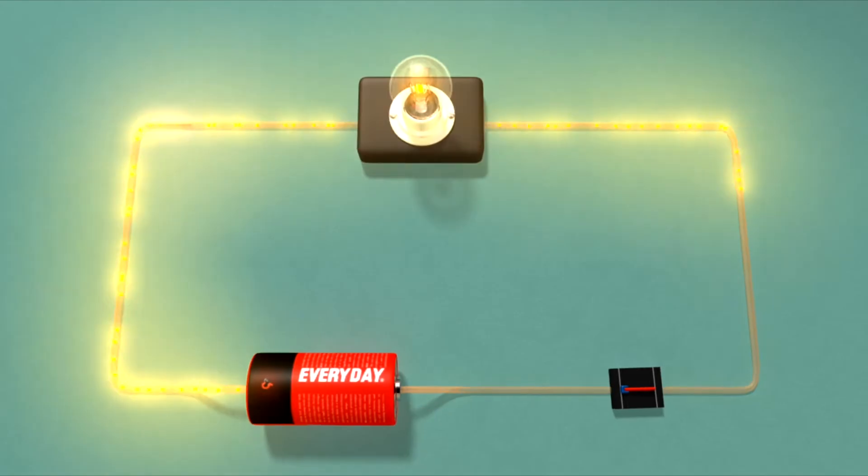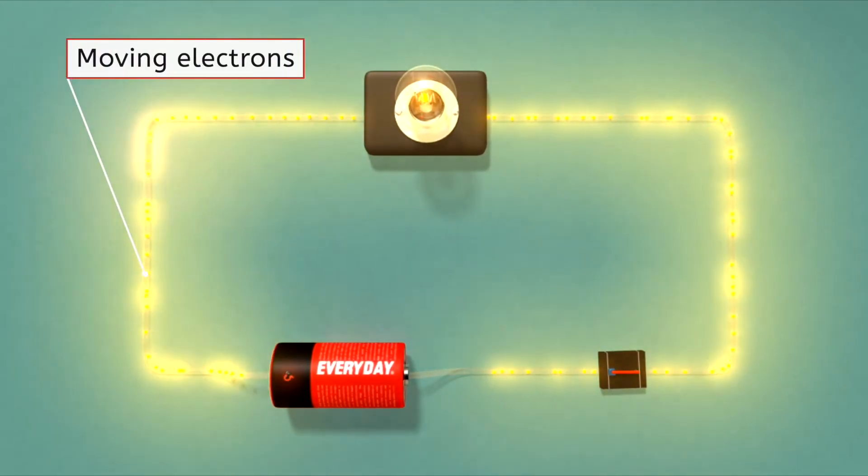Electrons moving through a wire generate electrical energy that can power light bulbs and a multitude of other devices that we depend on each day.